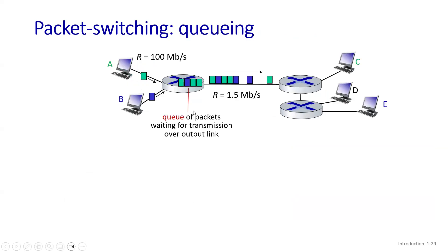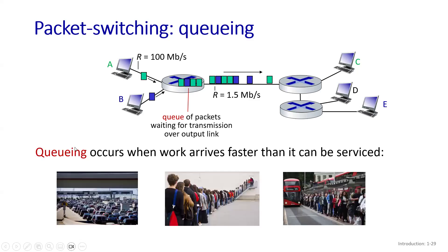In packet switching there can also be an issue of queuing, which we call queuing delay. Queuing means that if the router is receiving packets at a higher rate than it can transmit on the output link, queues will get created on the routers. This is like going to a bus stop or an office to apply for a license — if the person at the desk is not processing applications at the same rate people arrive, queues will start building up.